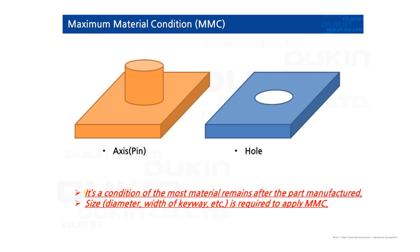Let me put it in a simple way. So MMC is a condition of the most material remains after the part manufactured. Think of this axis pin type product. When the most material remaining would be the biggest size. But then the hole would be the smallest size.